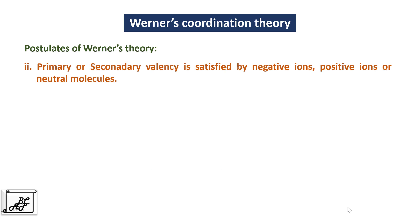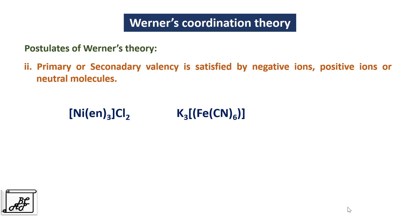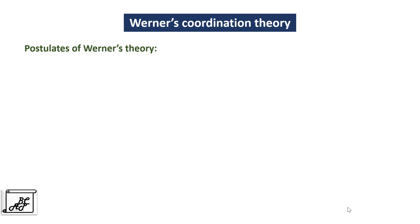The second postulate is: the primary or secondary valency is satisfied by negative ions, positive ions, or neutral molecules. For example, in Ni(En)3Cl2, where En stands for ethylenediamine, the primary valency is satisfied by the chloride ion, which is a negative ion, and the secondary valency is satisfied by ethylenediamine, which is a neutral bidentate ligand. In the second example, K3Fe(CN)6, the primary valency is satisfied by the positive ion potassium, and the secondary valency is satisfied by the negative ion cyanide.